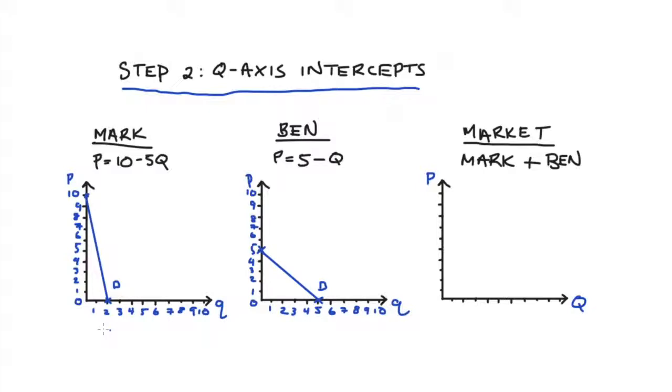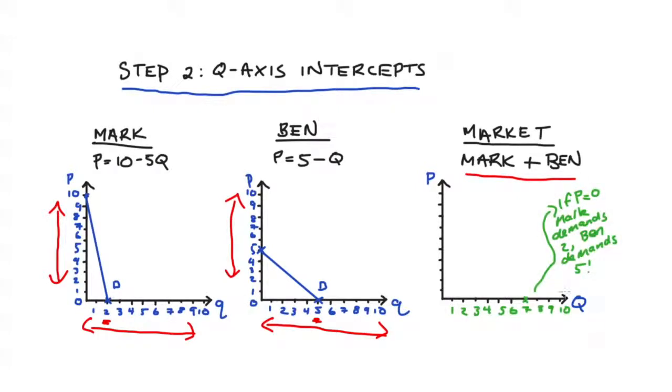The second step is to construct our quantity axis intercept. As we just saw, the quantity axis intercept for Mark is 2 and for Ben it is 5. Now let's think about what our demand curves are doing here. They're giving us the relationship between the price of a good and the amount that is demanded for each individual at each one of those prices. So the quantity axis intercepts tell us how much each individual would demand if the price was 0. If the price was 0 Mark is demanding 2 units and Ben is demanding 5. But remember the market consists only of Mark and Ben. So if the price is 0 then the amount demanded in the market would be 7. That is 2 units from Mark's demand and 5 units from Ben.